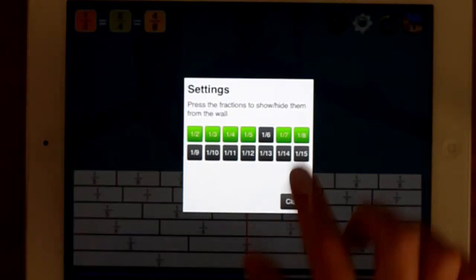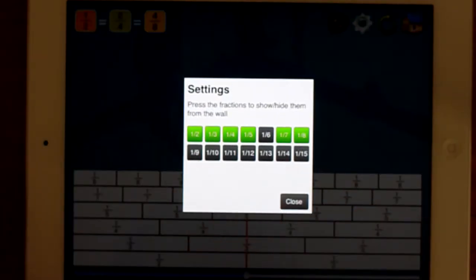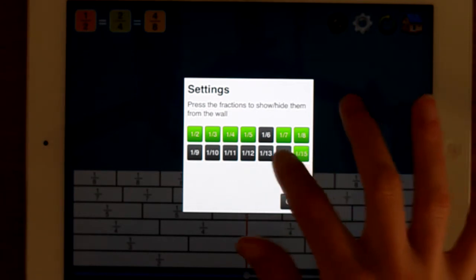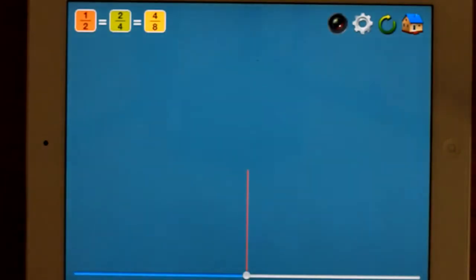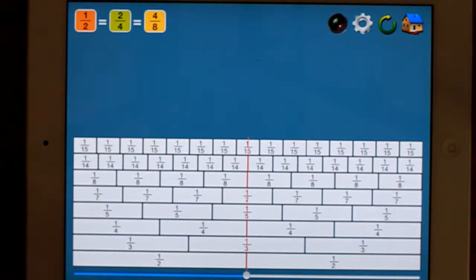You can change the setting, so obviously I've put ninths to fifteenths out of it. I'll just put fifteenths and fourteenths in. Something about the ruler that is important is, of course, that it does need to be pretty exact. So thirteen fifteenths is almost twelve fourteenths, but it's not. So you do need to be quite exact with where you put the ruler.